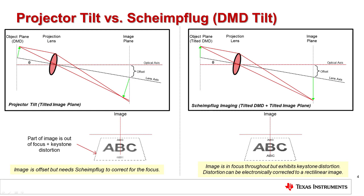Tilting a projector will not only induce keystone distortion, which may be tolerated, but also a partially defocused image towards one side. To correct the defocus issue, the Scheimflug principle states that an object plane, or DMD in this case, can be tilted to compensate for the tilted image plane. The image would still exhibit keystone distortion, but would be in focus throughout the entire image. This keystone distortion is then manageable through electronic distortion correction or image processing to produce a rectilinear image.